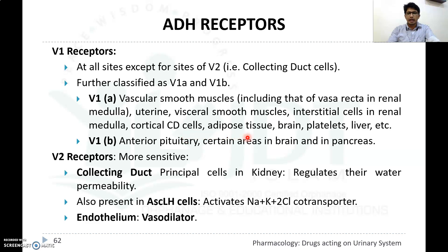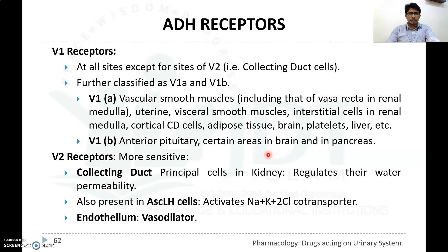V1A receptors are also found in interstitial cells of the renal medulla, cortical collecting duct cells, adipose tissue, brain, platelets, and liver. V1B receptors are found in the anterior pituitary, certain brain areas, and the pancreas. V2 receptors are more sensitive receptors for ADH, present in the collecting duct principal cells of the kidney, regulating water permeability, and in ascending loop of Henle cells, activating Na⁺-K⁺ co-transport for reabsorption. V2 receptors are also present in the endothelium, producing vasodilation.